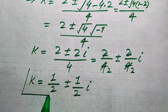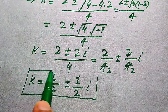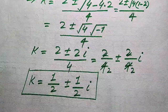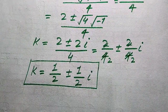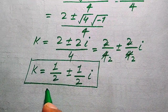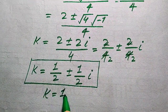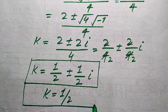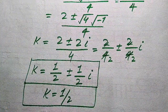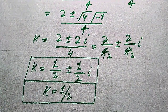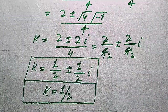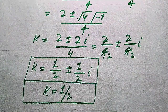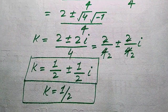These are the two complex roots from Equation 2. The only real root of the given equation is k equals 1/2. So the three roots of the given equation are k = 1/2, k = 1/2 + i/2, and k = 1/2 − i/2. This is our final answer. Thank you for watching — please subscribe to my channel for more videos.